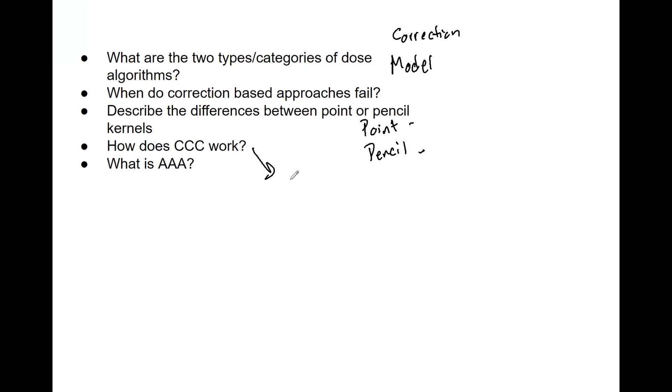So somewhere you have to sacrifice accuracy to speed up the calculation, and that is how collapsed cone convolution does it—it ignores the multiple scattering events.